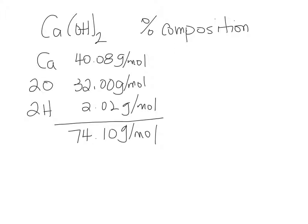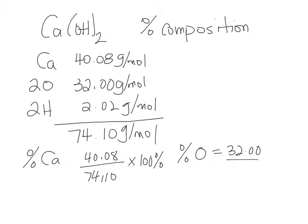So to figure out the percent calcium, we'll take the molar mass of calcium, divide it by the molar mass of the whole thing, times 100%. Oxygen would be 32 grams per mole divided by 74.10 times 100%. So you take the molar mass that is that element, divide it by the total molar mass of the entire compound, and multiply it by 100%. So the percent of hydrogen will be the lowest because it's the least amount of mass.